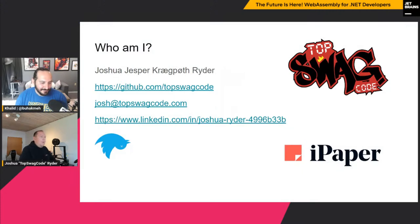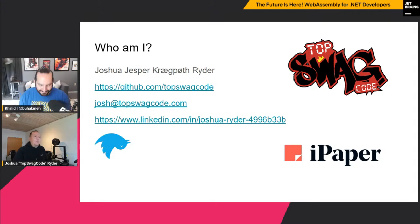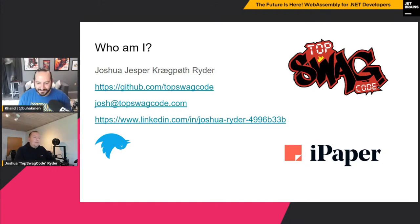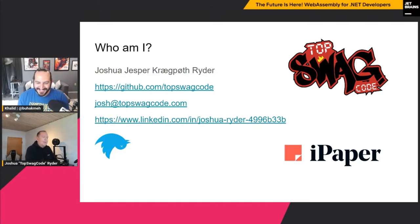First, the mandatory 'who am I?' My full name is Joshua Jesper Krefel Ryder — not easy for anyone to pronounce anywhere in the world. I work for a small company called iPaper in Denmark, doing digitizing experiences. I don't have a Twitter handle, never had, never will — at this point it doesn't really make sense. If you want to reach me, write me an email or find me on LinkedIn.